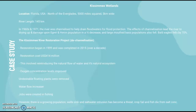The Kissimmee River Restoration Project was introduced as a method of de-channelization. It began in 1999 and was completed in 2015, taking over a decade, with a restoration cost of $414 million. It involved reintroducing the natural flow of water and its natural ecosystem. Because of that, oxygen concentration levels improved, undesirable floating plants were removed from the river channel, water flow increased, and jobs were created in fishing. Despite this, there is a growing population in the area with industries and economic growth, wells are sinking, and saltwater intrusion has become a threat, along with crop failure and fish dying from increased salt concentration. So there are still some issues despite this very successful restoration project.